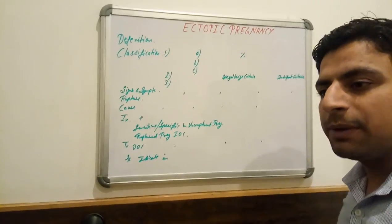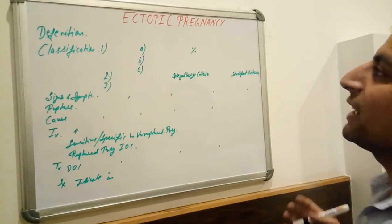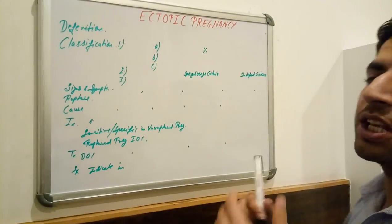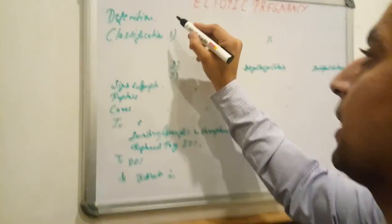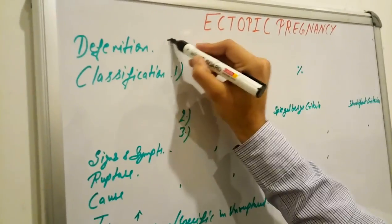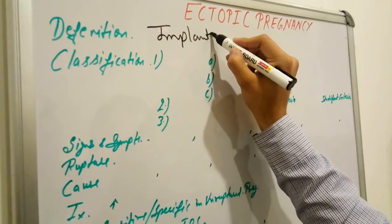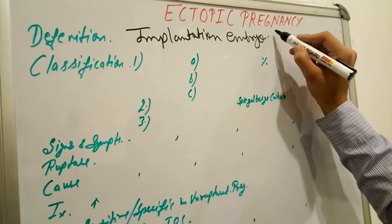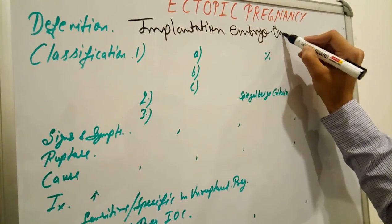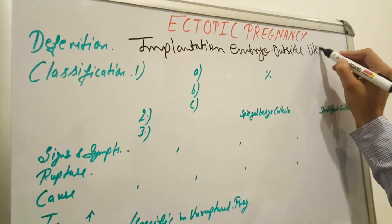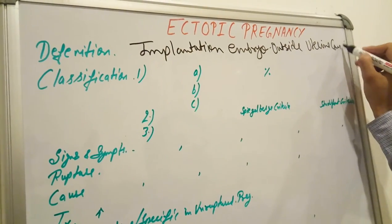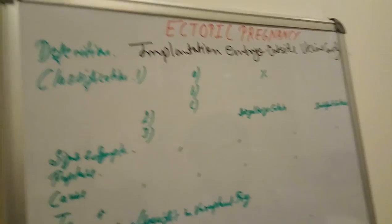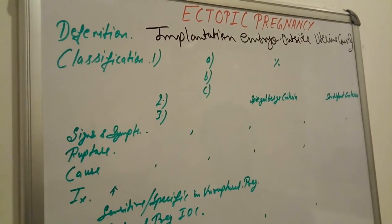The definition of ectopic pregnancy: the meaning is not a normal pregnancy. Ectopic means not in their place. So the definition is: implantation of the embryo outside the uterine cavity. Not inside the uterine cavity where the normal embryo implants — it is outside.